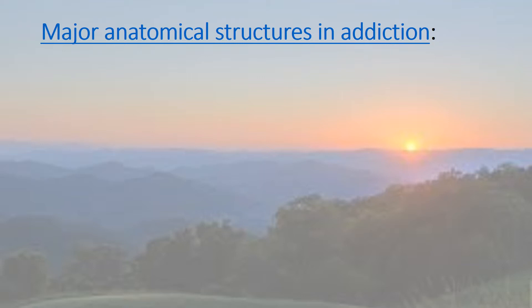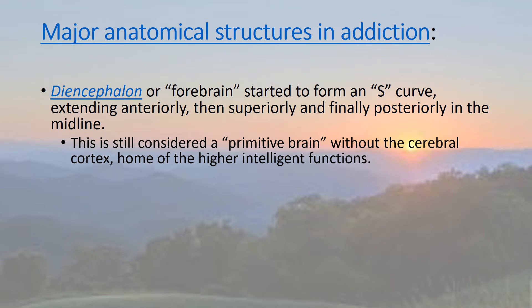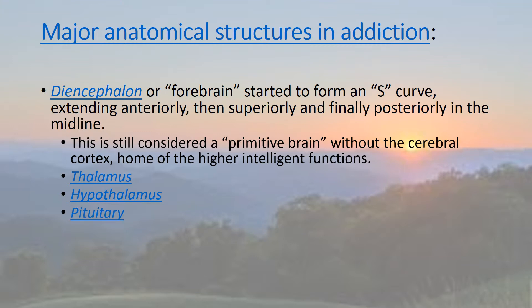The diencephalon, or forebrain, is up toward the top of that S-curve and below the corpus callosum. This is still considered somewhat primitive brain because the cerebral cortex has not yet been reached — that's the home of the higher intelligent functions. The diencephalon contains the thalamus, which can be thought of as a router or switchboard where a lot of information passes through to other parts of the brain. The hypothalamus connects to the pituitary, which controls all the endocrine system hormones all over the body. The basal ganglia are also part of the switchboard apparatus, located below and to the front of the forebrain. The basal ganglia and diencephalon are in full control of voluntary motor movements, procedural learning, routine behaviors or habits, eye movements, cognition, and emotion.